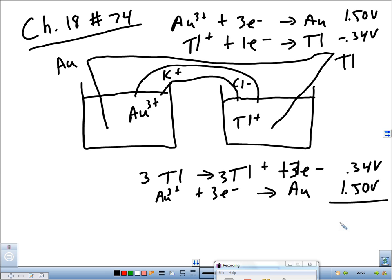So we're taking that and adding it to the gold. Au³⁺ + 3e⁻ yields gold, and that's 1.50 volts. And I add them together. What do I get for a total voltage? 1.84. And then this thing down here, my electrons are canceling, and I get 3Tl yields 3Tl⁺ + Au. That is the overall reaction.